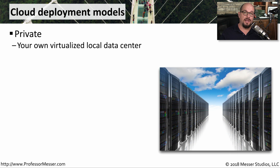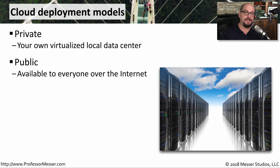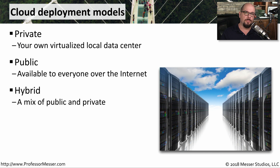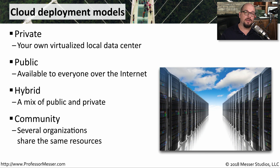There are many different ways to build a cloud. If you wanted to put together your own data center with your own cloud-based systems, you would be effectively creating a private cloud in your own virtualized data center. If you're using a third-party data center, then you're probably using a public cloud that's available to everyone on the internet. If you had a combination of a private and a public cloud, we refer to this as a hybrid cloud deployment model. There's also the community cloud deployment model, where many different groups get together and as a community share the exact same resources in that single cloud.